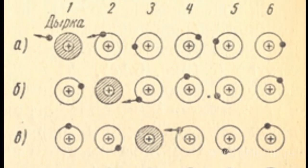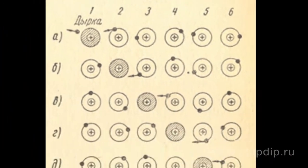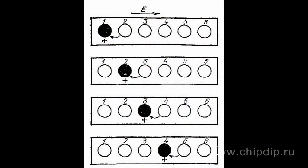Physicists call a fixed positive ion with the lack of an electron a hole. A current that is generated as a result of the apparent motion of holes is called a hole current. The result is something like the movement of a positive ion, although the ions themselves are motionless.